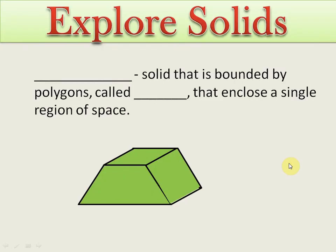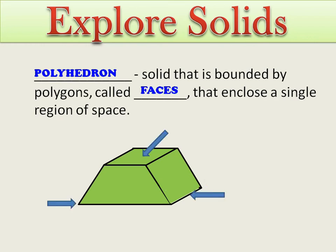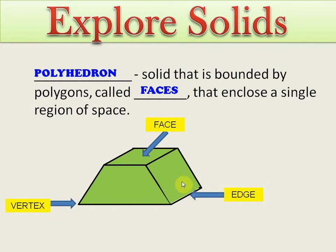Now we explore solids. A polyhedron solid has polygon faces. In the figure you can see the face, the edge — where lines attach to the polygons — and the vertex, which are the corners. When different polygons attach to each other they make a 3D shape, and this shape is called a polyhedron.